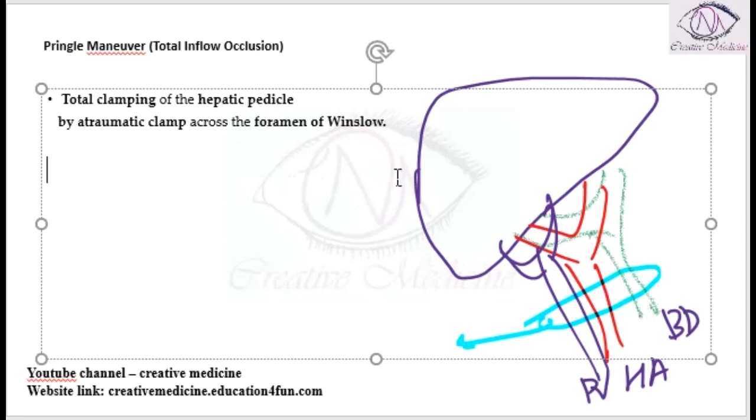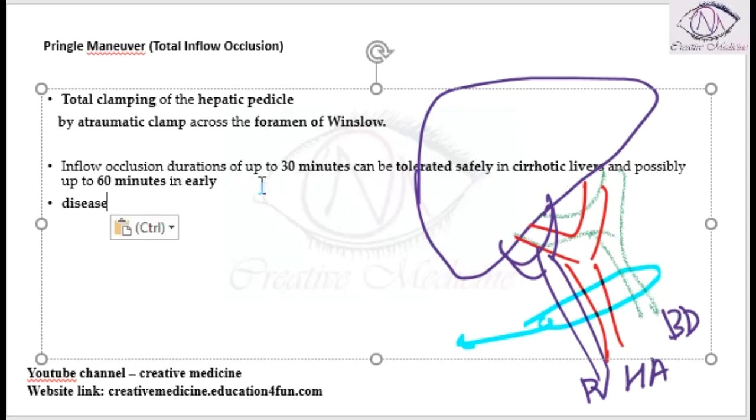Right. So, if you occlude it, you are actually occluding the hepatic artery arterial supply to the liver. So, this liver can tolerate it.